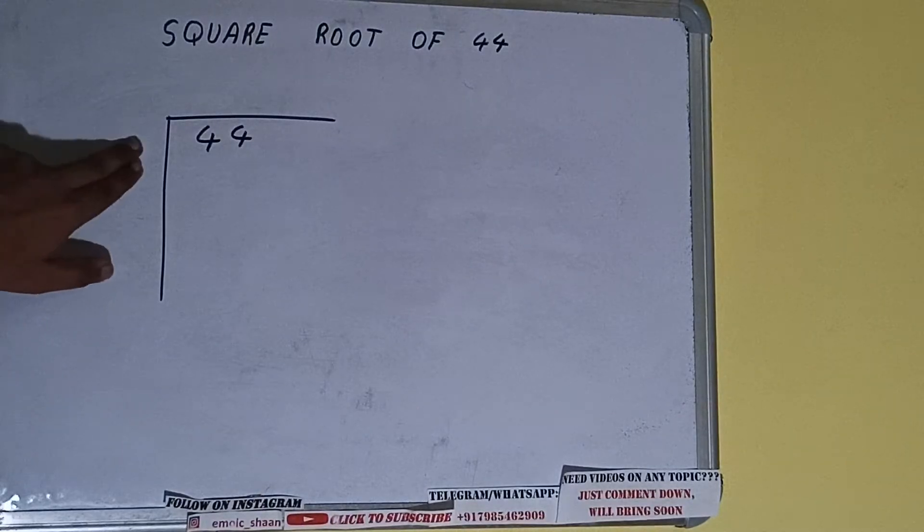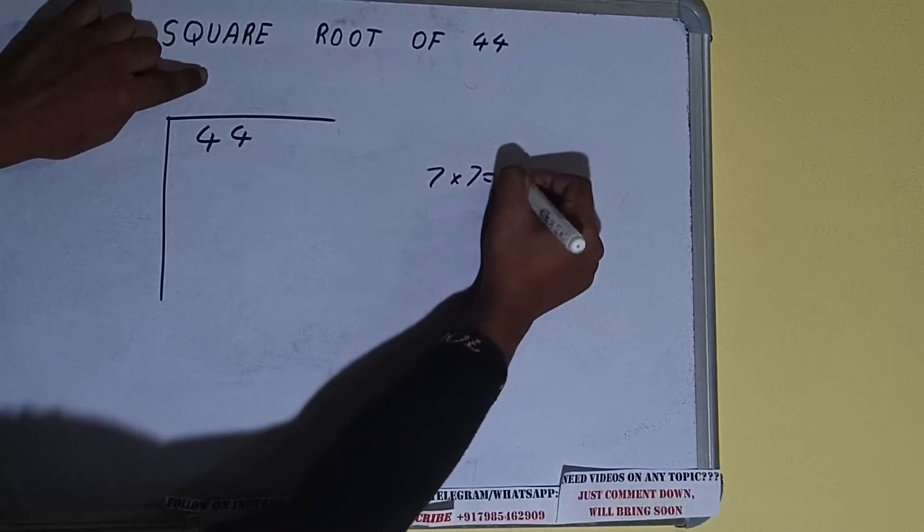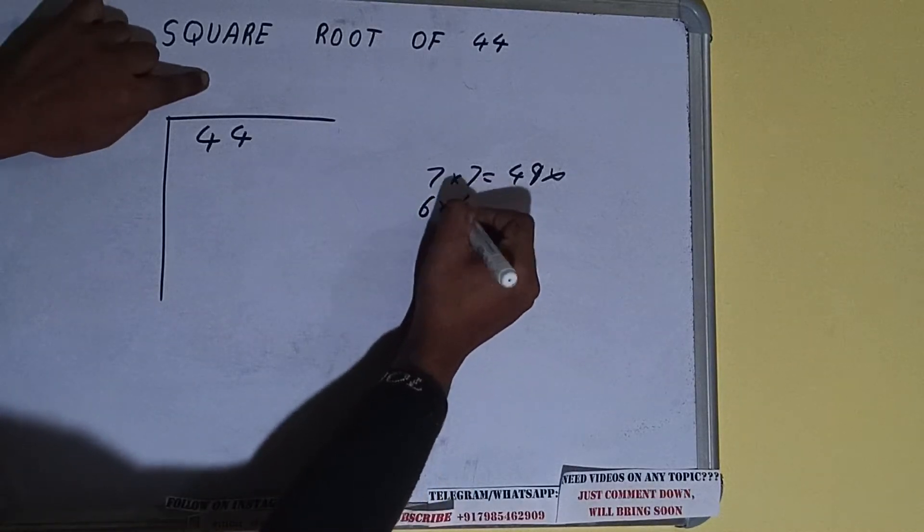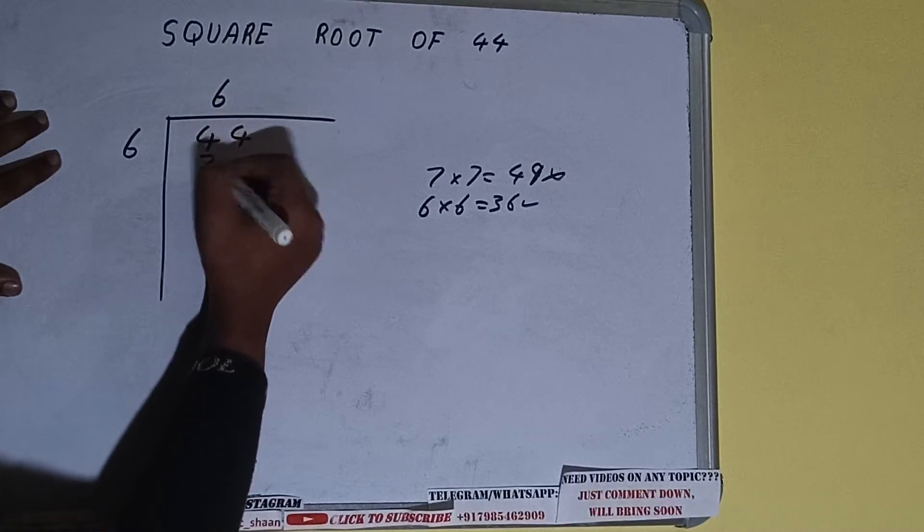So if we write 7 here and 7 here, it will be 49 which is greater than 44, so we cannot use it. If we write 6 here and 6 here, it will be 36 which is good to use. So 6 here and 6 here, 36.